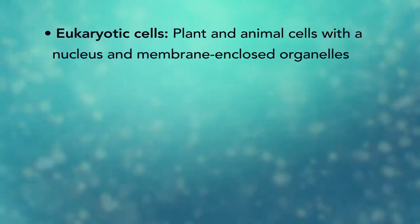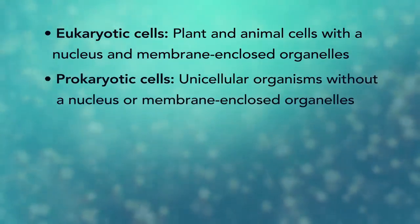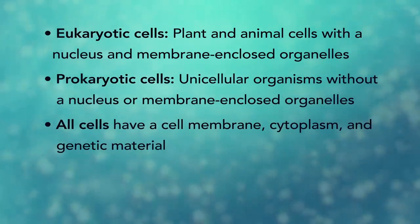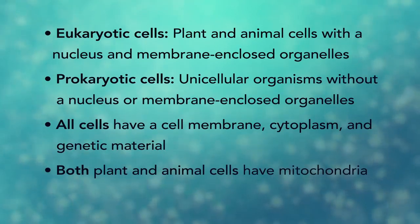In summary, remember, eukaryotic cells are plant and animal cells with a nucleus and membrane-enclosed organelles, while prokaryotic cells are unicellular organisms without these things. All cells have a cell membrane, cytoplasm, and genetic material. And even though only plant cells have chloroplasts, both plant and animal cells have mitochondria.